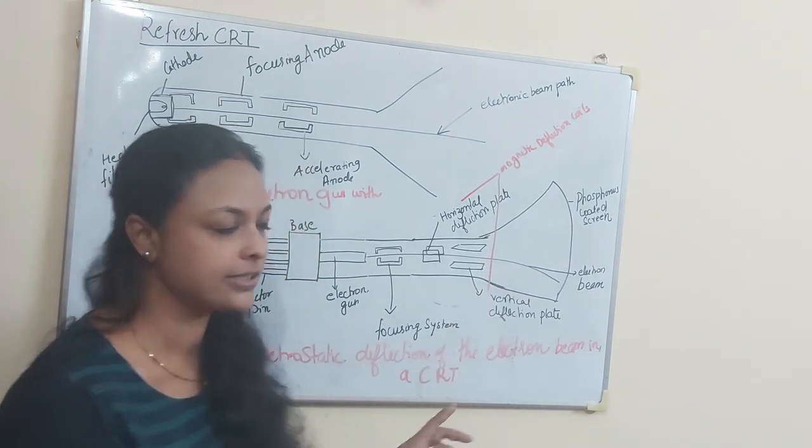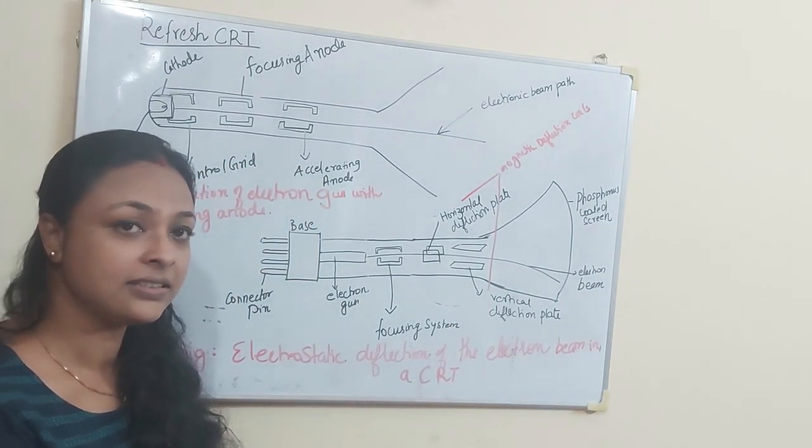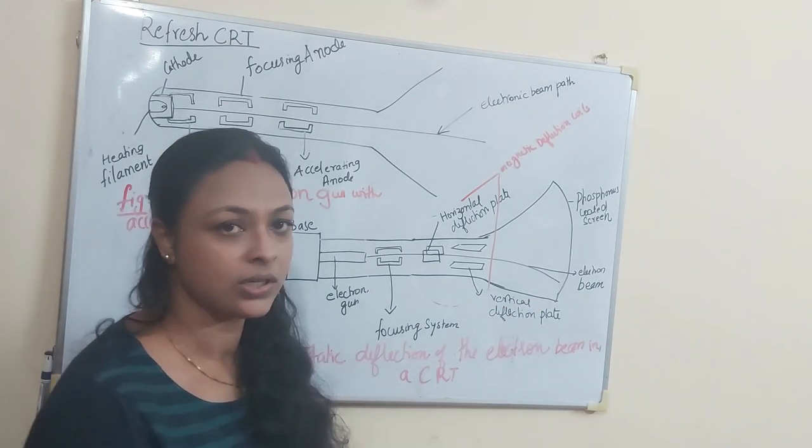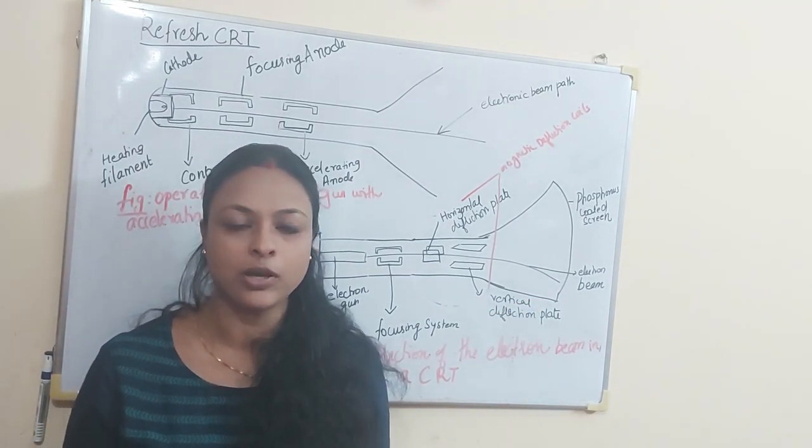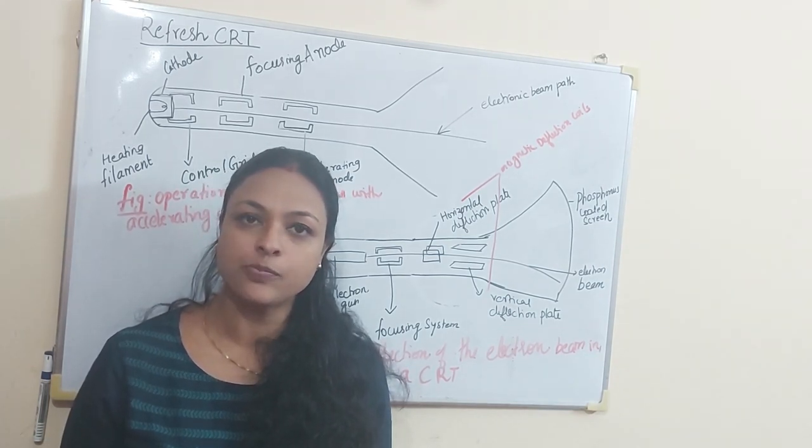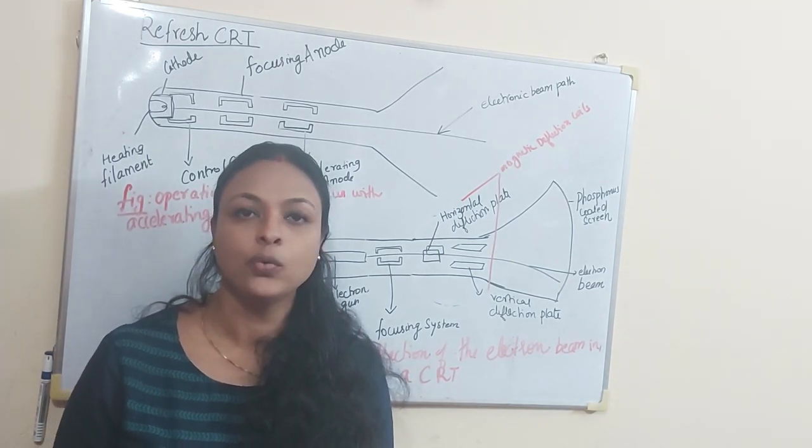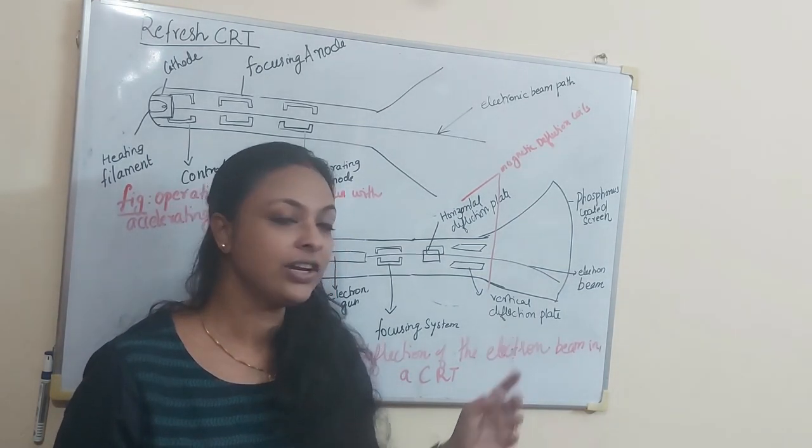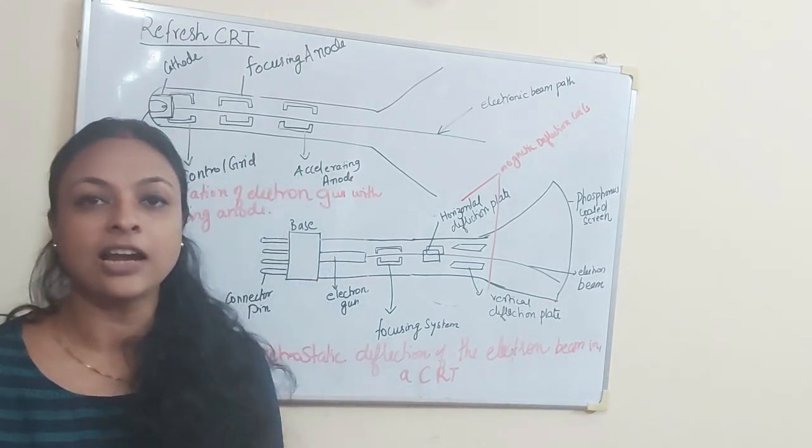Magnetic deflection coils direct this beam onto the phosphorus coated screen. The phosphorus coated screen is highly positively charged. When a highly negatively charged particle falls on a positively charged phosphorus coated screen, you will get a display.